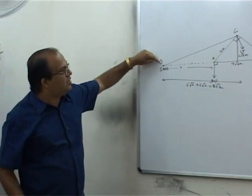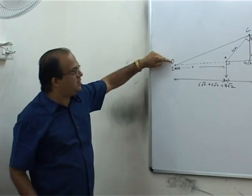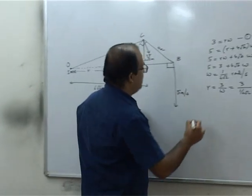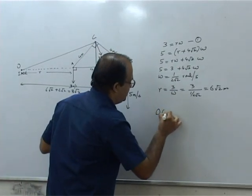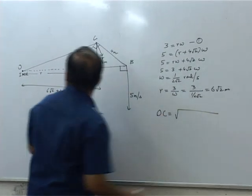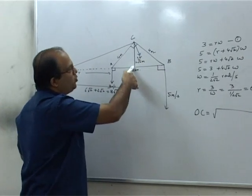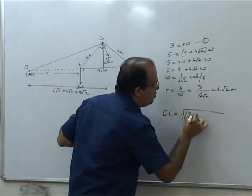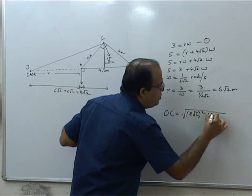Now OC we can find by applying Pythagorean theorem. OC will be equal to root over (8√2)² plus (2√2)².